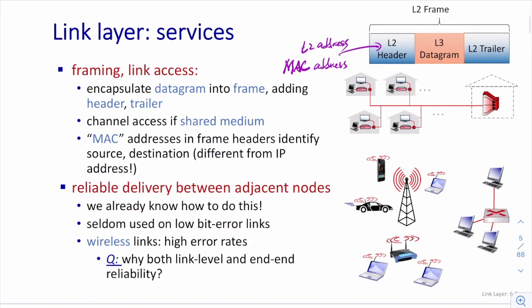The data link layer is responsible for transferring datagrams from one node to an adjacent node over a link. The layer 3 datagram is encapsulated by layer 2 headers and, for some protocols, a trailer. This is slightly different from TCP or UDP, which only have headers — some layer 2 protocols have both headers and trailers. The most important field in the layer 2 header is the MAC address, similar to how source and destination IP addresses are the most important fields at layer 3.